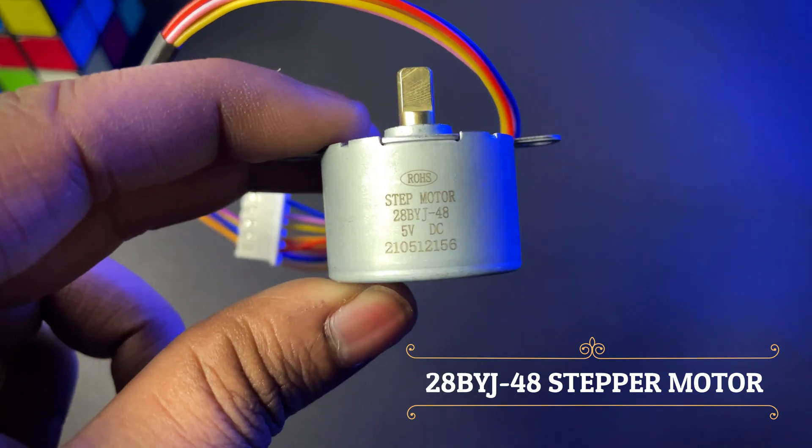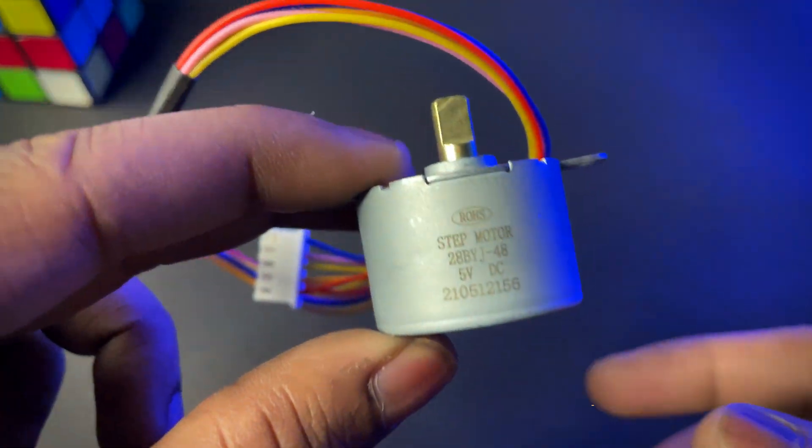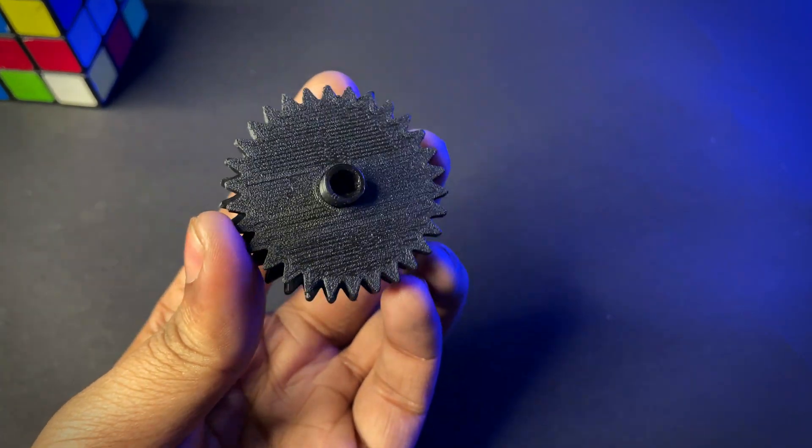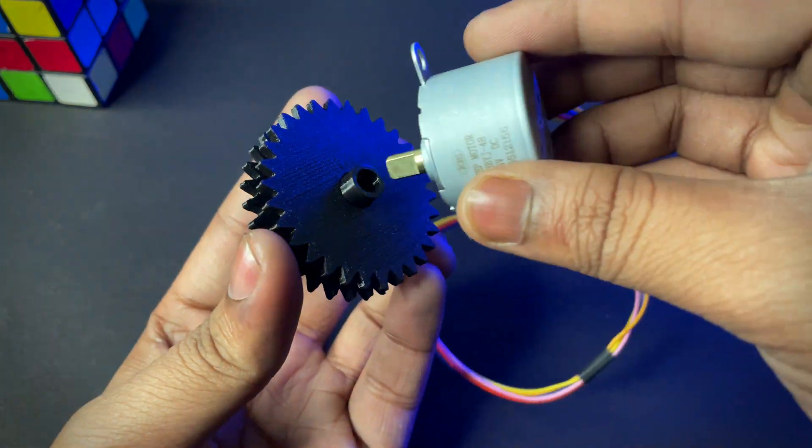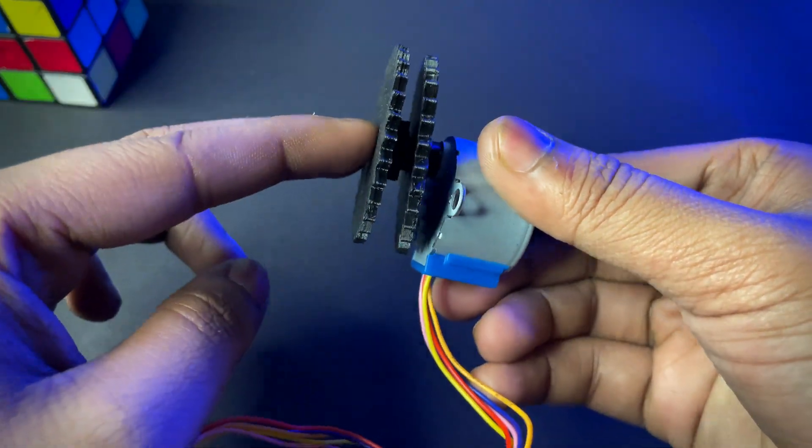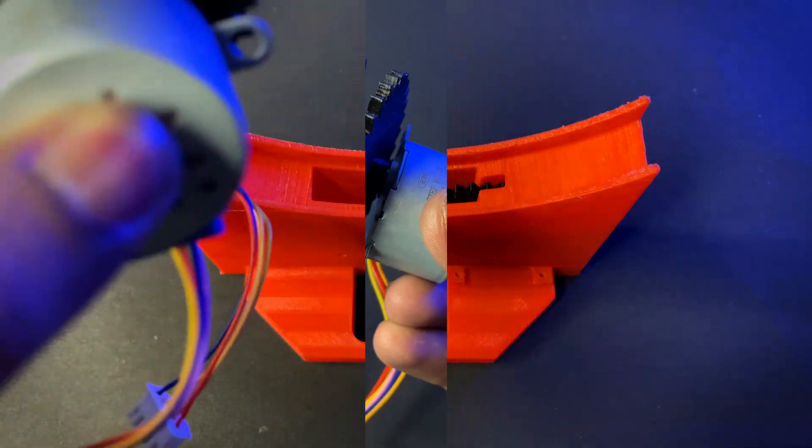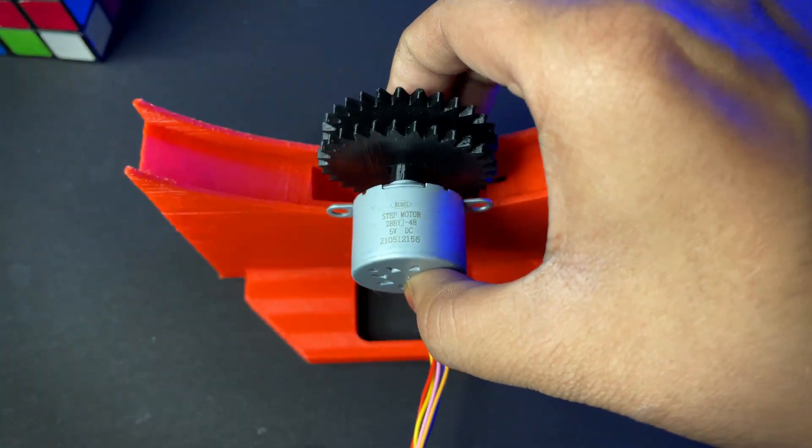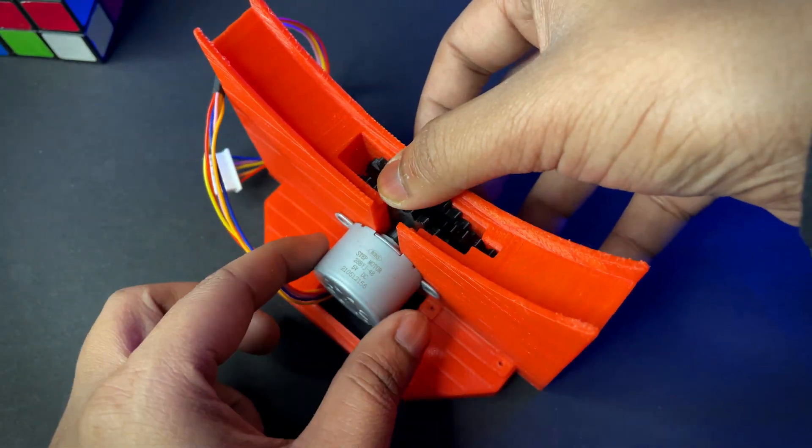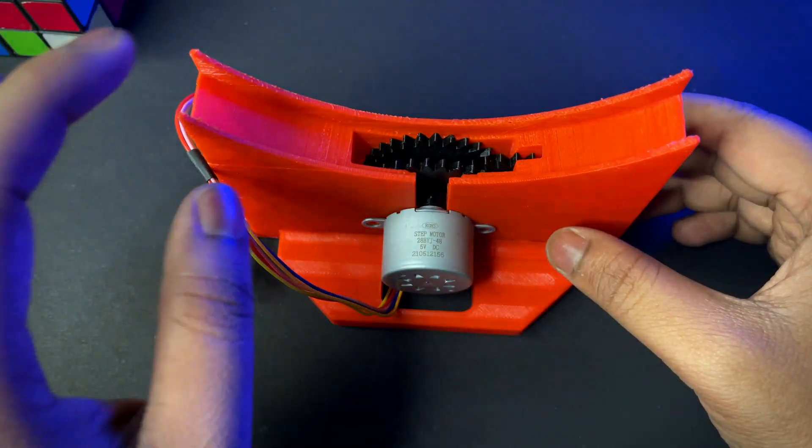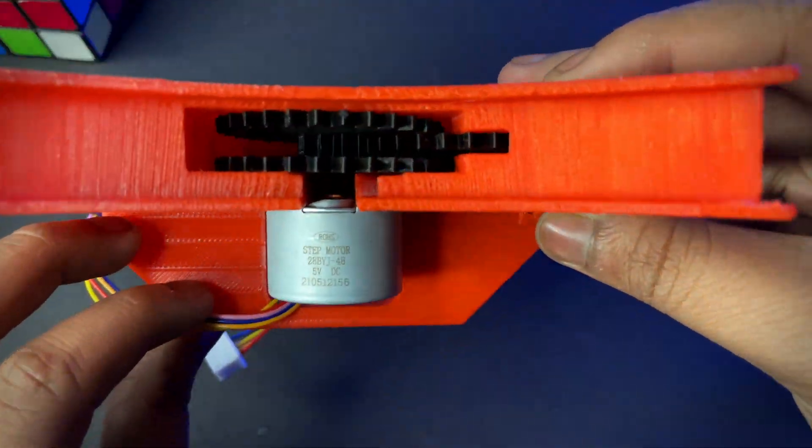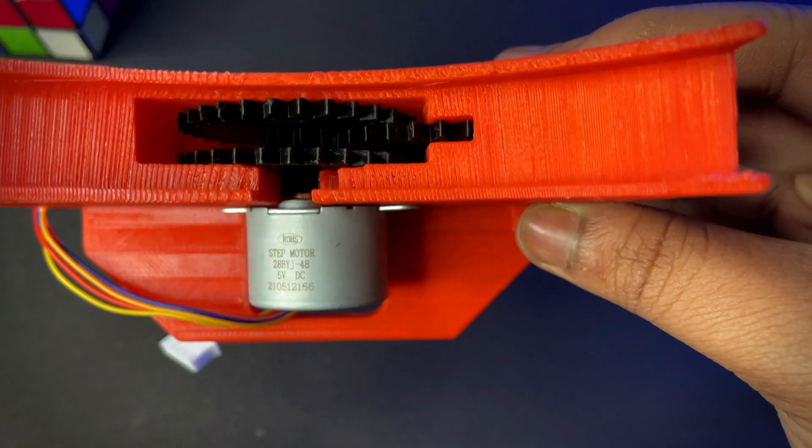You need 28 BYJ 48 stepper motor and it works on 5 volt. Now place the motor on that two gears and then place it inside the hollow space again. You can see how the three gears are placed.